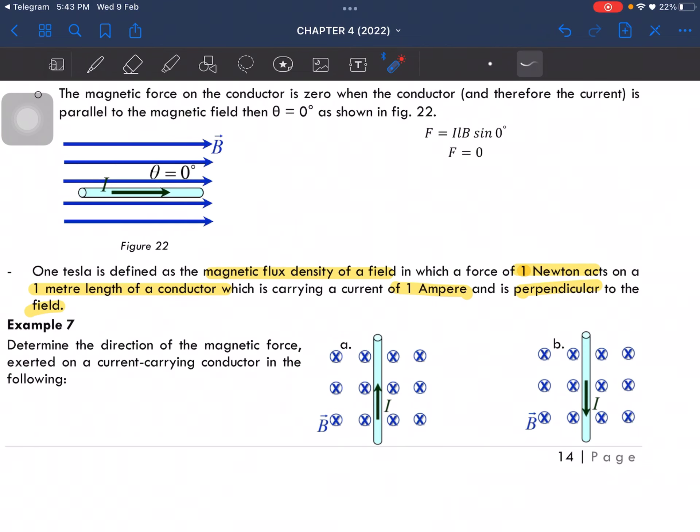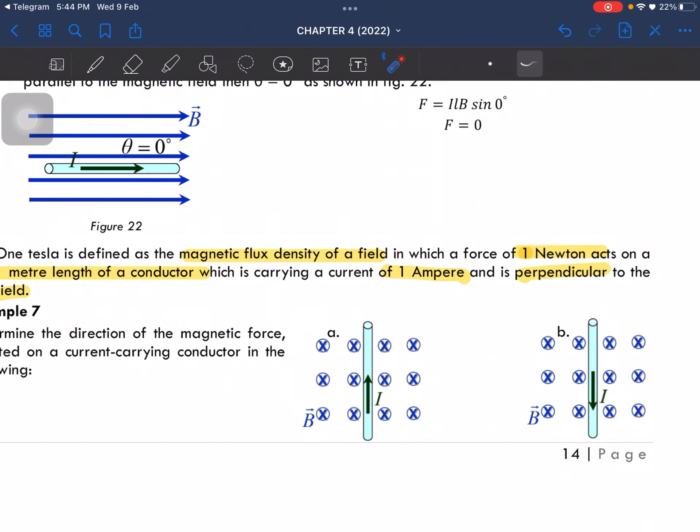Remember the current direction is determined by our middle finger. So our middle finger should be pointing upwards and then our magnetic field should be pointing into the page. Hence, our force is pointing to the left.